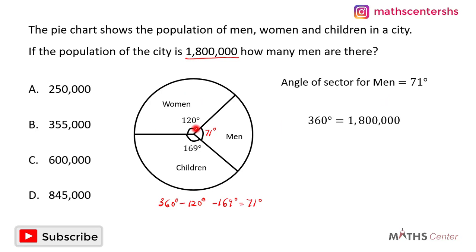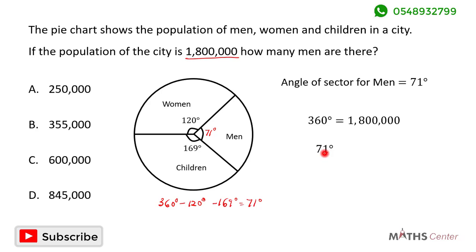We are going to use simple proportion to get the number of men in the city. If 360 degrees represents the entire population of one million eight hundred thousand, then 71 degrees — the sector angle for men — will give us less. So 71 degrees equals 71 divided by 360, times one million eight hundred thousand.